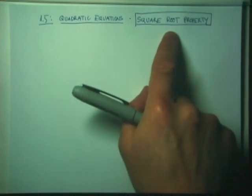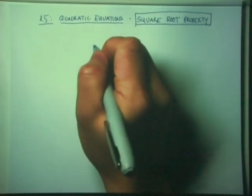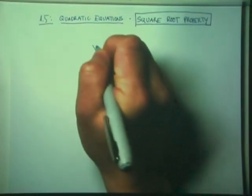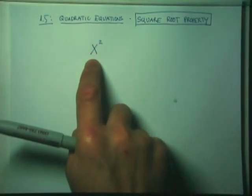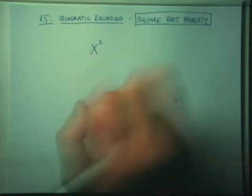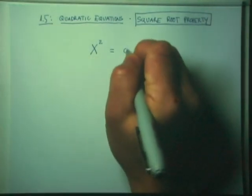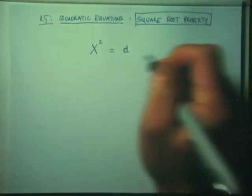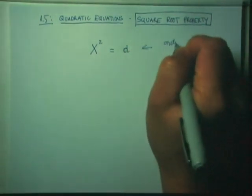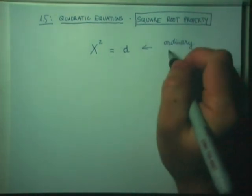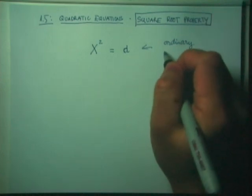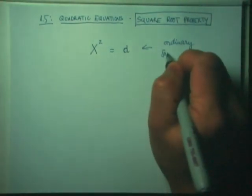Before you can use the square root property to solve an equation, you must bring your equation into the ordinary form. The ordinary form is going to be one perfect square — the capital X here can represent anything — equal to a number on the right-hand side of the equation. Before you can proceed with the square root property, you always need to bring your equation into this ordinary form: one single perfect square equals a number on the other side.